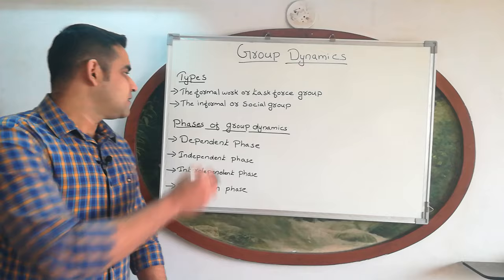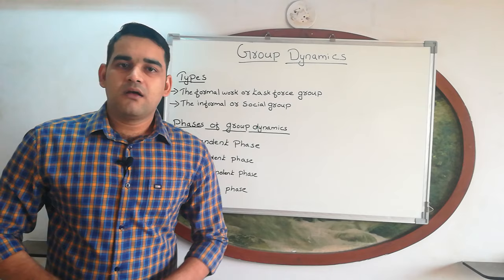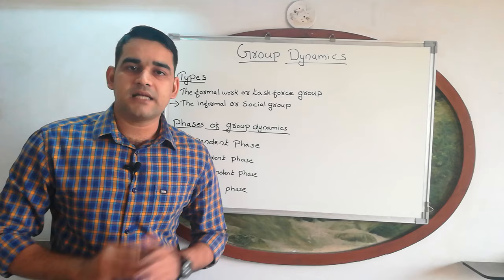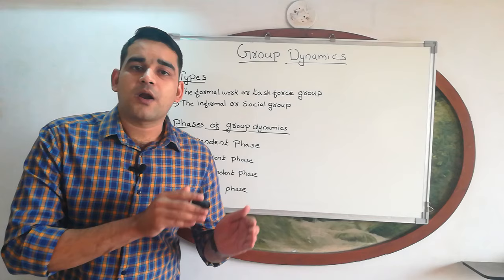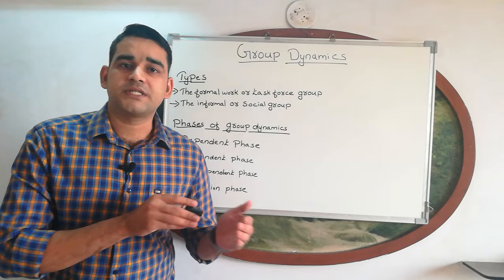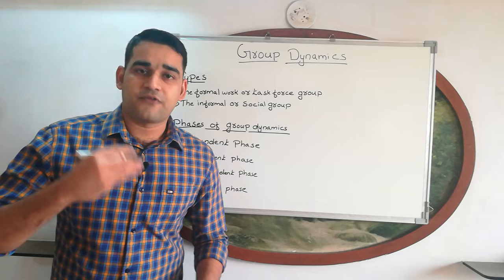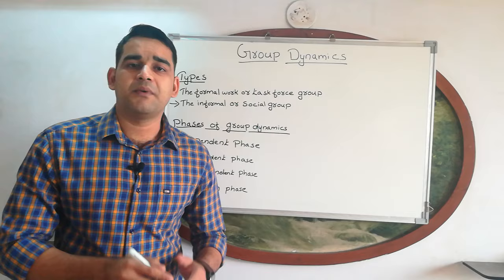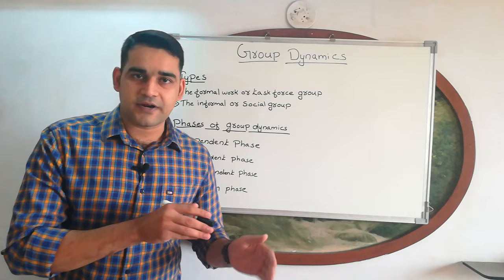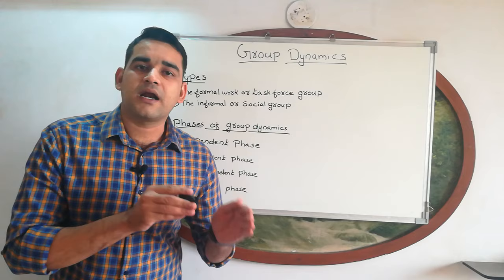The second classification is the informal or social group. The informal group is created to increase and reinforce friendship, to promote socialization, and to reduce stress related to the job. For example, clubs — arts clubs and sports clubs — where the main aim is to increase friendship, socialization, and reduce job-related stress.